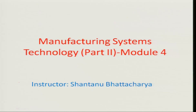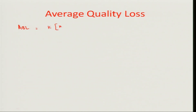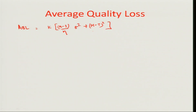Hello and welcome to this manufacturing systems technology part 2, module 4. We were discussing in the last lecture the average quality loss (AQL), which we figured out as k times of (n minus 1) divided by n, times the square of sigma plus (mu minus t) squared.